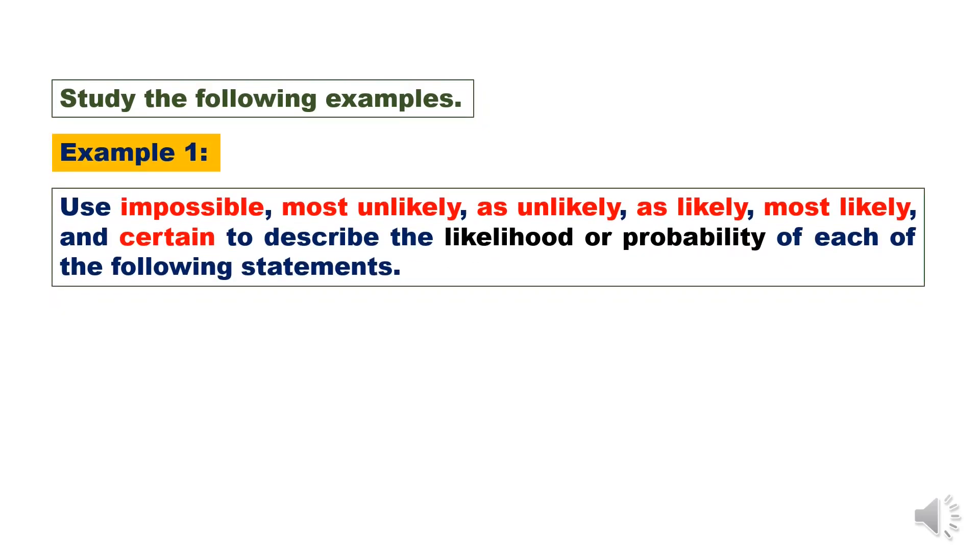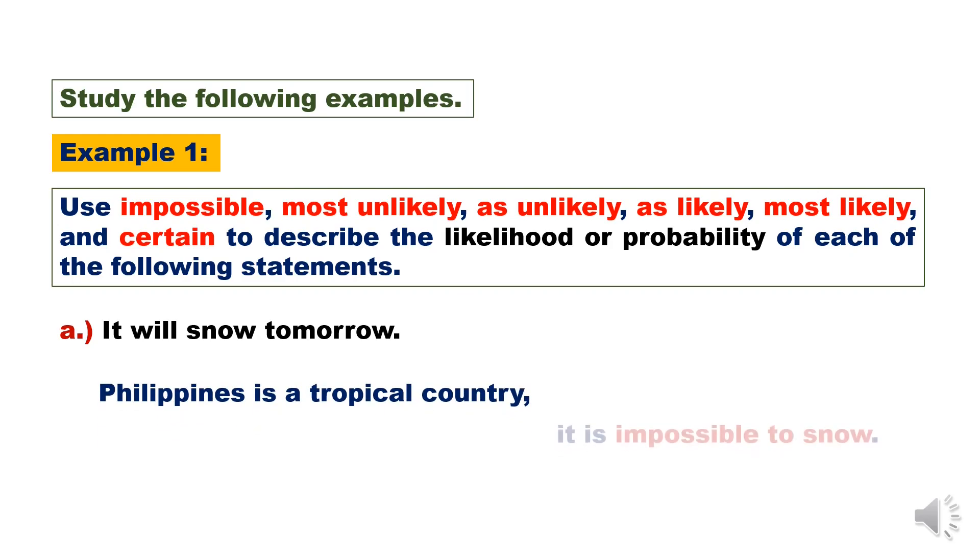Study the following examples. Example 1: Use impossible, most unlikely, as unlikely as likely, most likely, and certain to describe the likelihood or probability of each of the following statements. A. It will snow tomorrow. Philippines is a tropical country. It is impossible to snow.